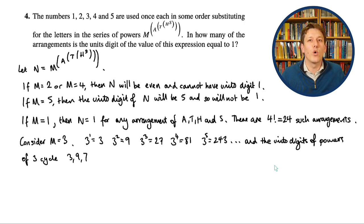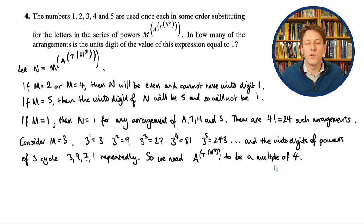So the fact that we get into this cycle means that for a units digit of 1, we need something like 3 to the 4, or 3 to the 8, or 3 to the 12. So we need the a to the t to the h to the s part to be a multiple of 4, and then I'll have 3 to a multiple of 4, and then it will end in a 1. Now clearly, that can only happen if a is even. If a was odd, I'll have 1, 3, or 5 raised to some power, and we're not going to end up with an even number, so we're not going to end up with a multiple of 4.